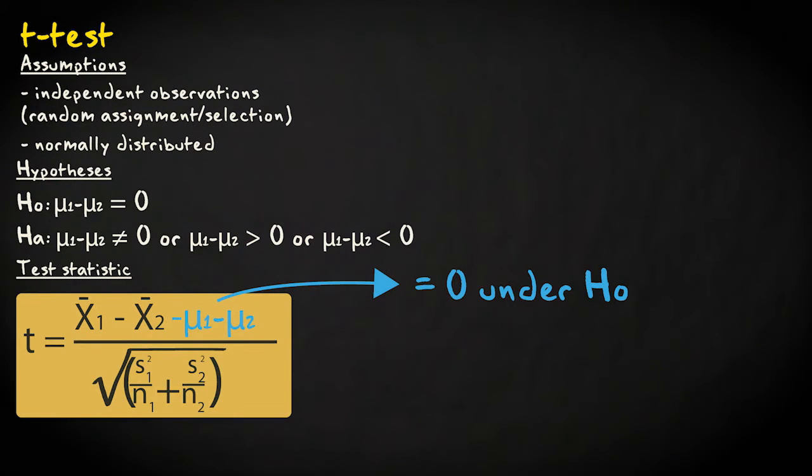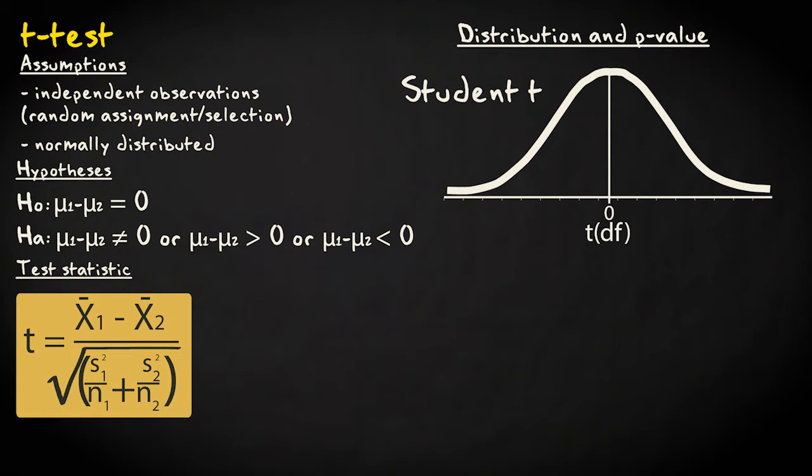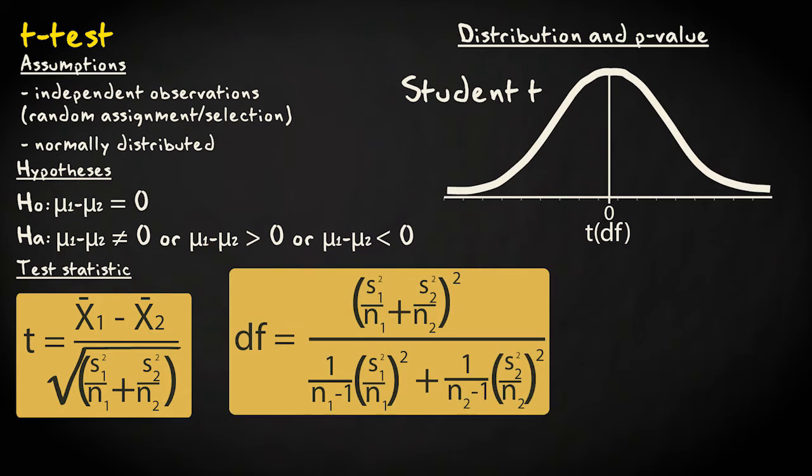The test statistic t equals the difference in sample means minus the expected value under the null hypothesis, zero, divided by the standard error, which equals the square root of the sum of the group variance divided by its sample size for each group. The test statistic follows a student t distribution with a rather complicated number of degrees of freedom.